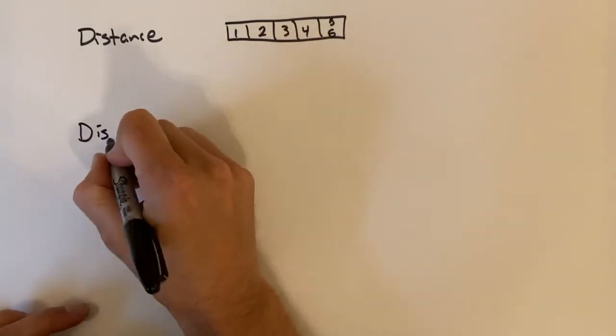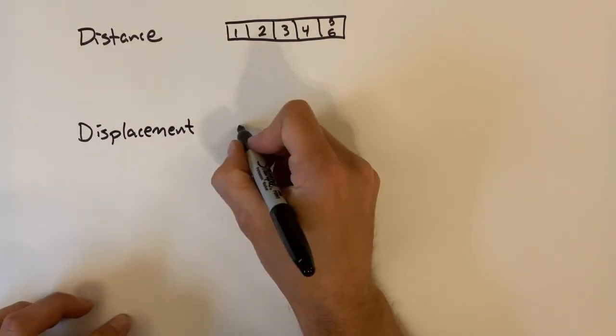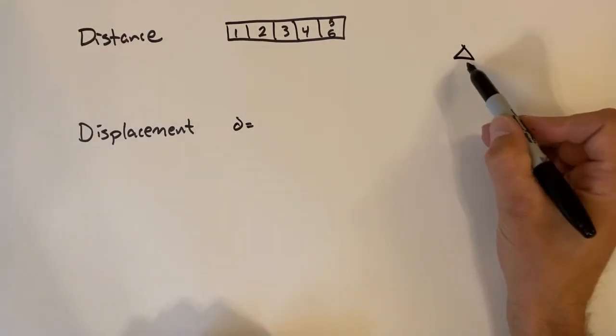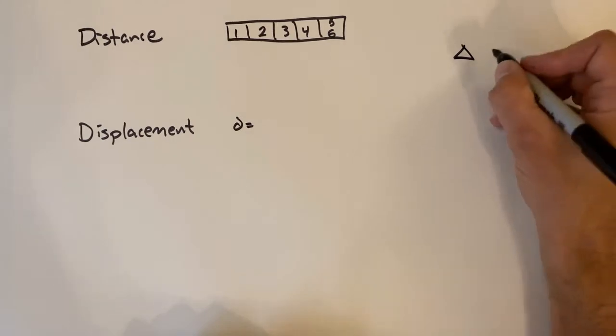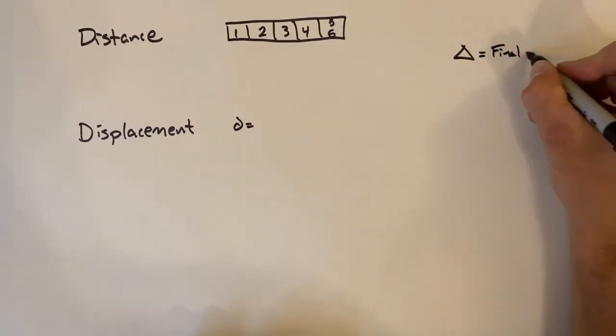Displacement, well that's a little different here. Displacement, we define as a change in position. Change is defined as a final value minus an initial value. We show change with a little triangle. This triangle means change. So change we define as final minus initial.